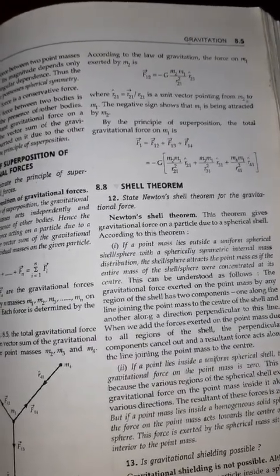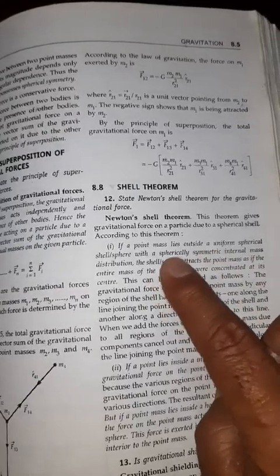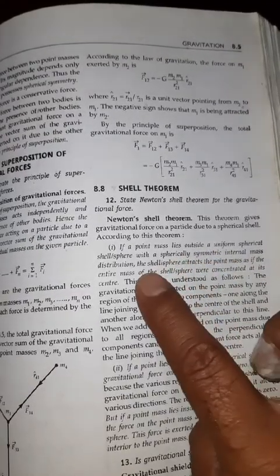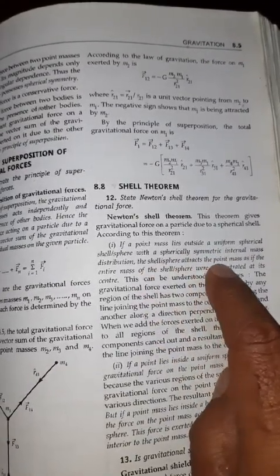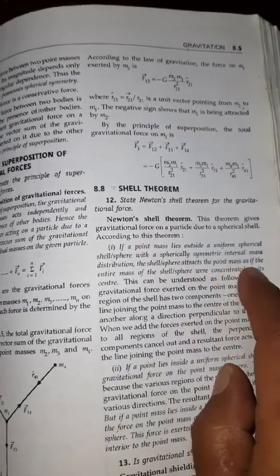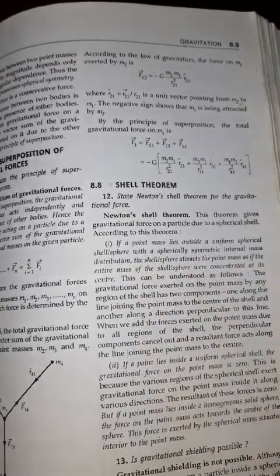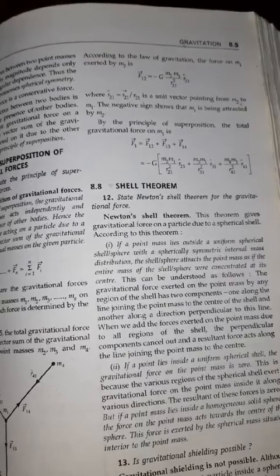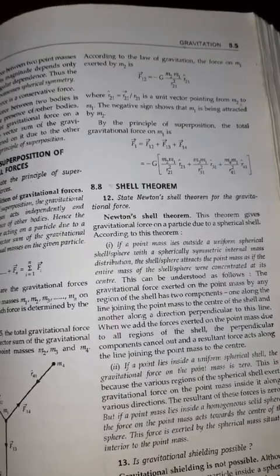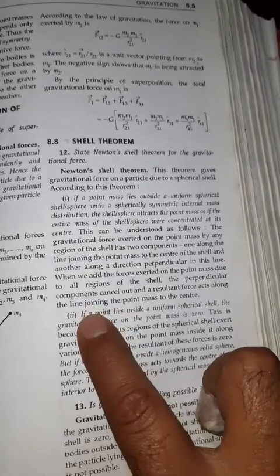A point mass lies outside a uniformly spherical shell with spherical symmetrical internal mass distribution. The spherical shell attracts the point mass as if the entire mass is present at the center of the spherical shell. So this is called shell theorem, and second point of the shell theorem